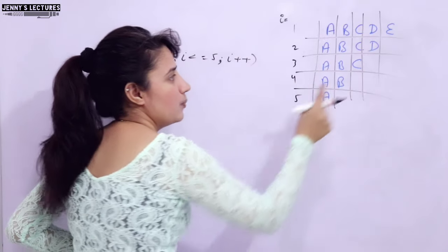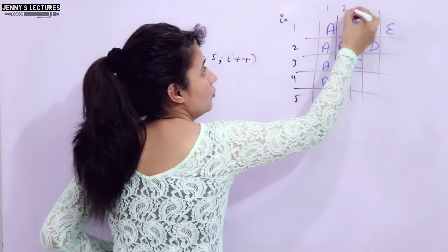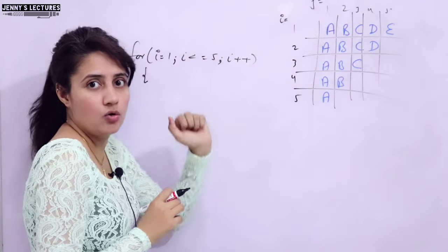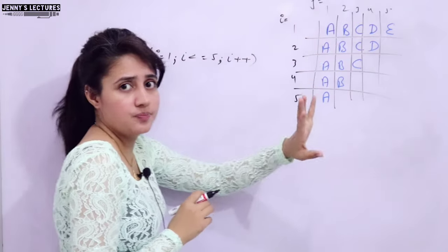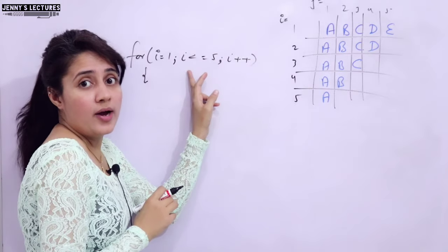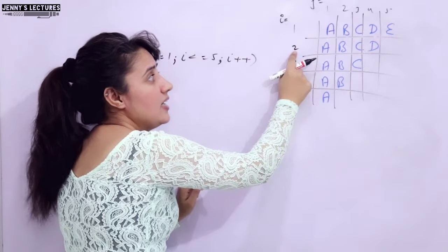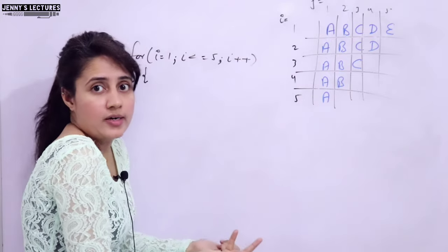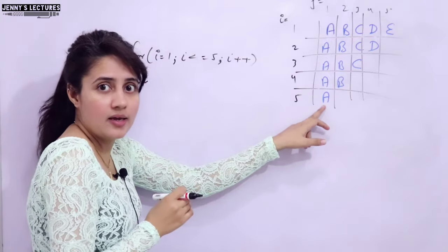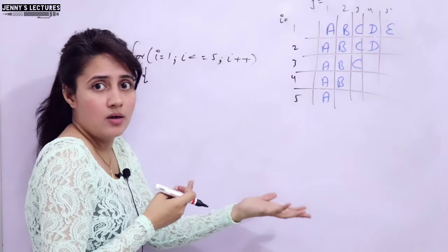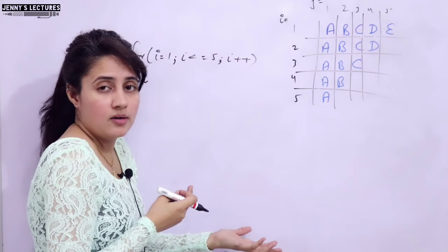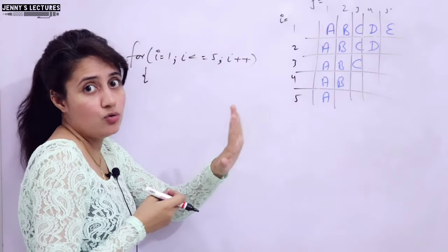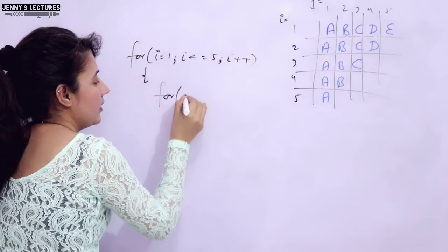The inner loop would be responsible for the actual printing. There are five columns and variable j handles them. But we cannot directly write j from one to five like we did in the outer loop. Because in the first line, j executes five times; in the second line, only four times; in the third, only three times; then two times; then one time. So j is changing. You have to think a little bit about what the stopping condition for j should be.